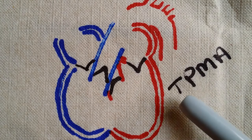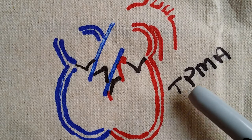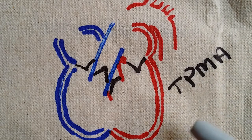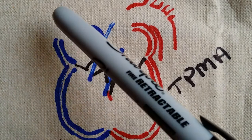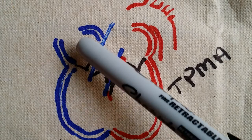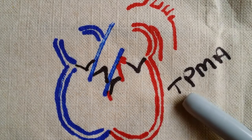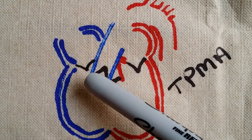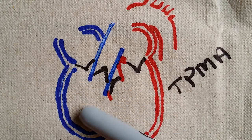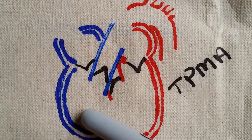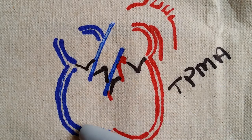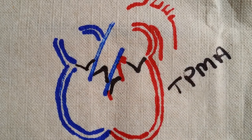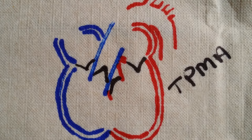One way to remember the valves is this mnemonic: 'Toilet, Paper, My Ass.' This is something I learned in paramedic school and it makes it relatively easy to remember. So we have the superior and inferior vena cava going into the right atrium, we pass the tricuspid valve, go into the right ventricle, and then through the pulmonic valve — that semilunar valve — into lung parenchyma.